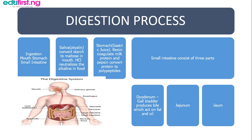Down in the stomach, we have the gastric juice. Renin coagulates milk protein and pepsin converts protein to polypeptides. Now the small intestine is also divided into three parts: we have the duodenum, the jejunum, and the ileum.